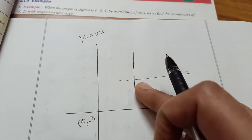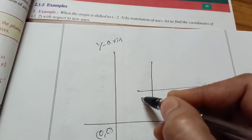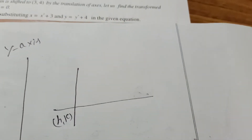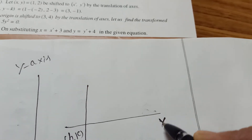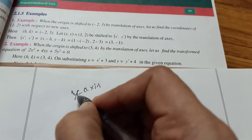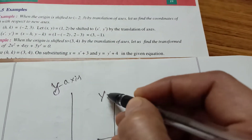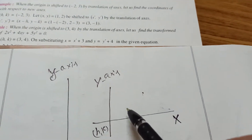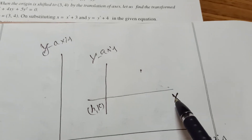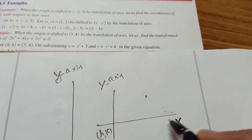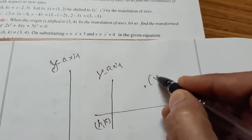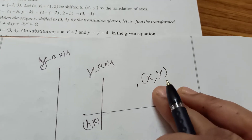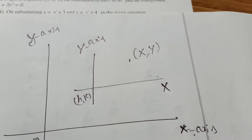Now the origin is shifted to the point H comma K. They are shifting small x to capital X axis. This is the capital X axis, this is small x, this is small y. Now this is the capital Y axis. So this point will now be capital X comma capital Y — that is the transformed coordinate.